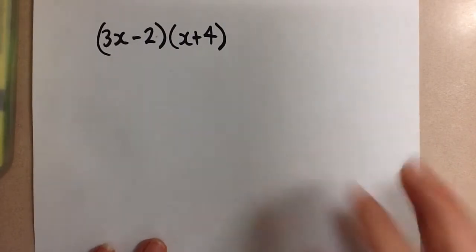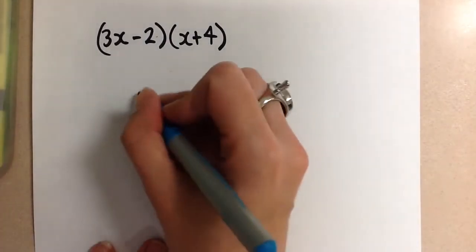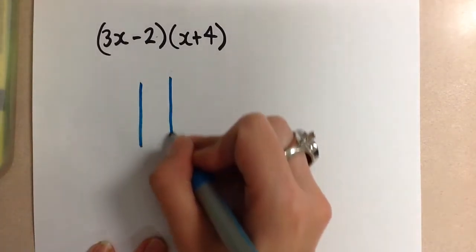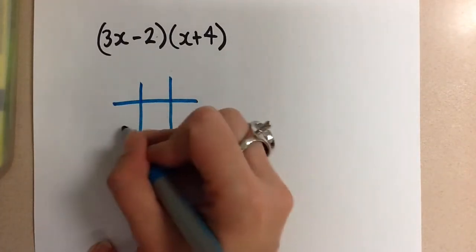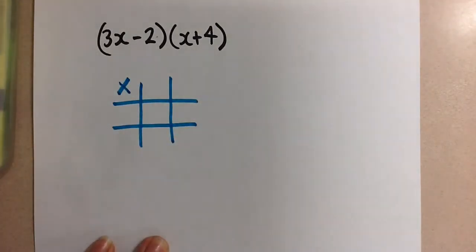And we will use the chart. So in order to expand this with the chart method, we start off with something that looks like a tic-tac-toe board. And the point of doing this is to create a multiplication chart, in a sense, like you guys are used to using since grade school.